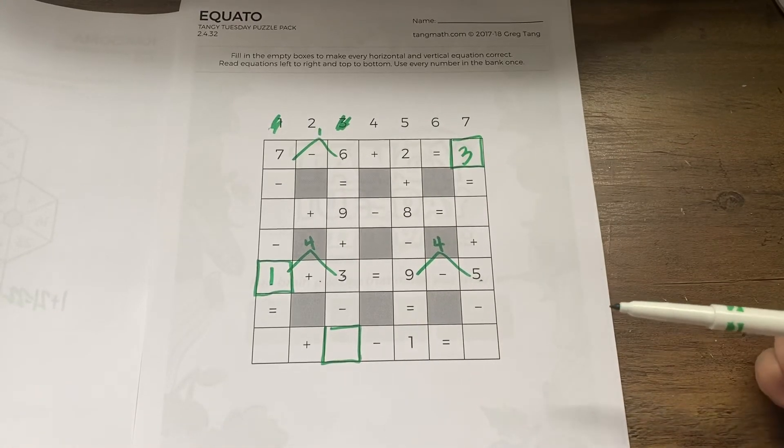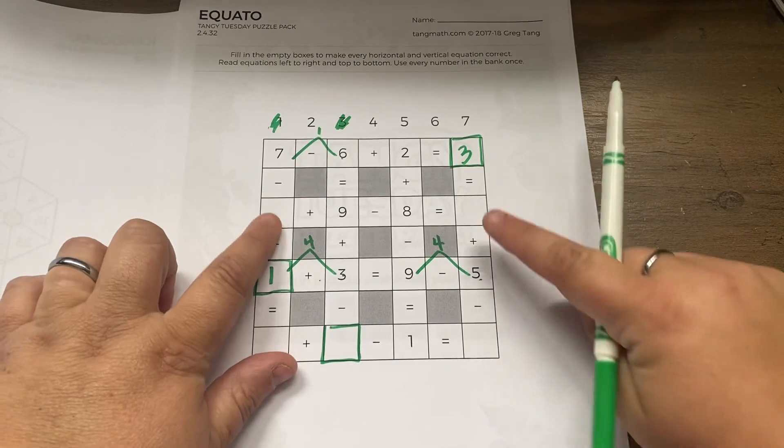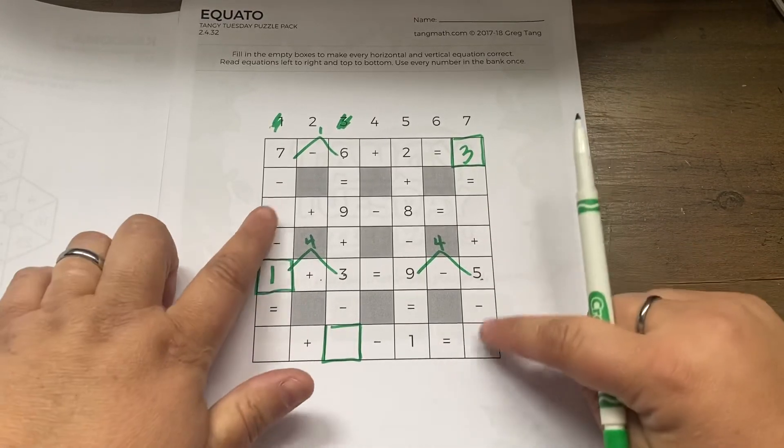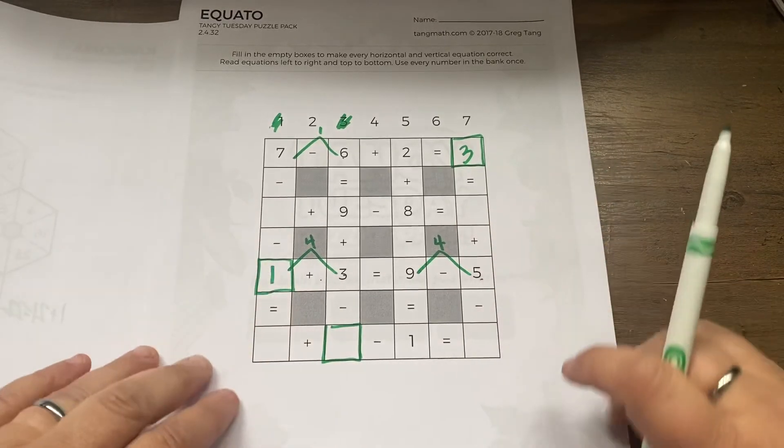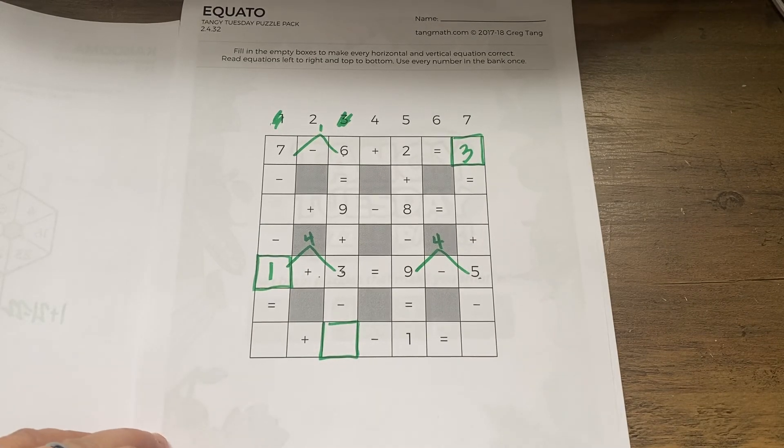See if you can figure out the rest. And some of them are a little tricky because there's two blank spaces. But by kind of working with the numbers you have, I bet you can figure it out. I know it's tricky. Do your best. It's like a little puzzle for your brain.